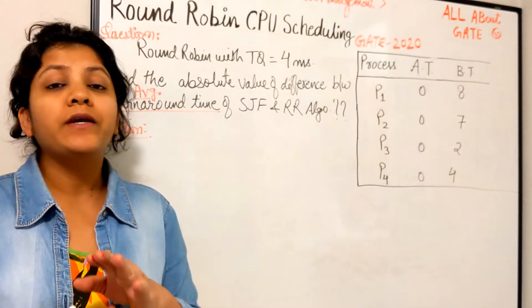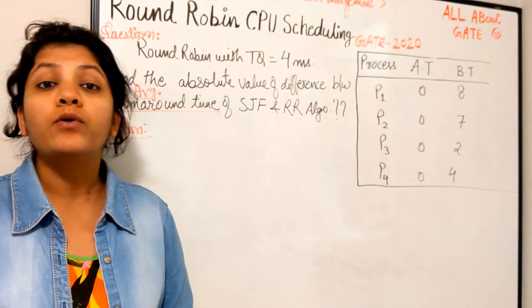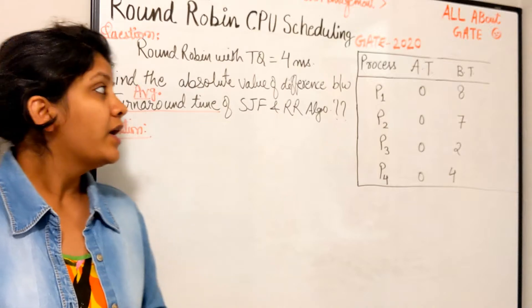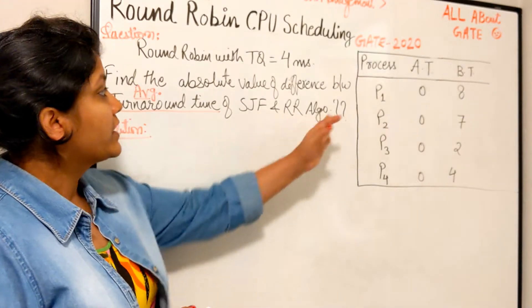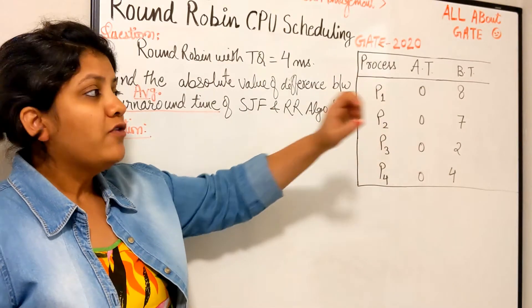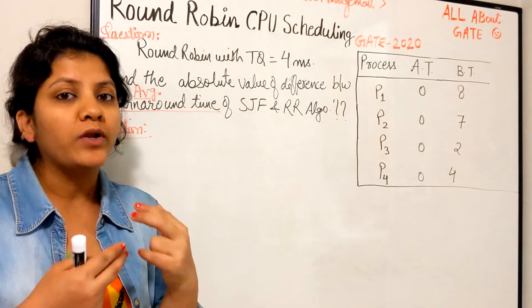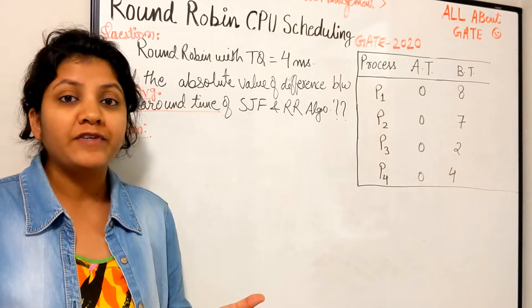Hello everyone, we are practicing previous year GATE questions for the Round Robin CPU scheduling algorithm. In this question we're going to solve the GATE 2020 question which makes use of two algorithms: Shortest Job First and Round Robin.